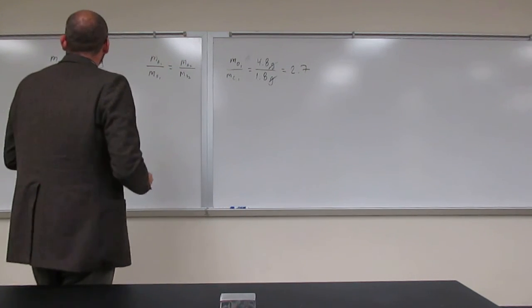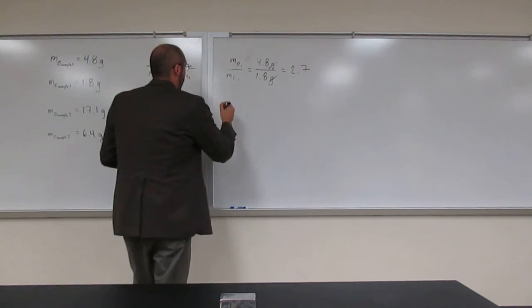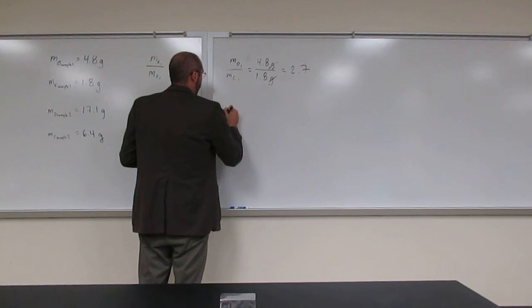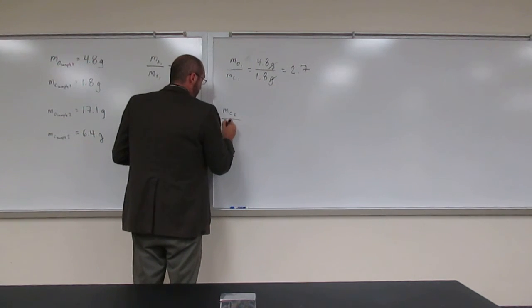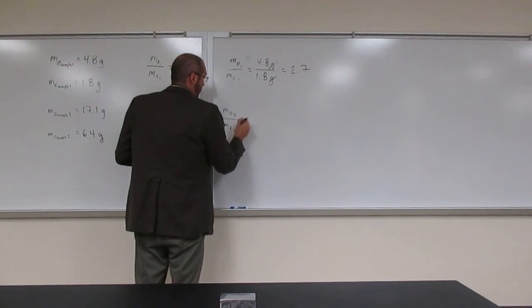Crossing our fingers, hopefully the ratio of the masses in sample 2 also equals 2.7. The mass of oxygen in sample 2 divided by the mass of carbon in sample 2.